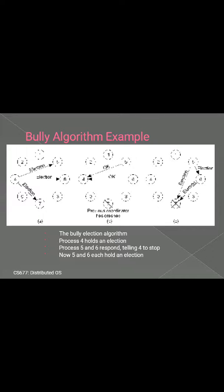In Figure A, we take an example of how the bully algorithm actually works. The figure shows a group of eight processes numbered 0 to 7. The previously coordinator was process 7, but it has just crashed. Process 4 is the first one to notice the crash. It sends an election message to all processes higher than it, namely 5, 6, and 7. Since 7 is already crashed, processes 5 and 6 both respond with OK, as shown in Figure B. Upon getting the first response, process 4 knows its job is over and waits to see who will be the winner.